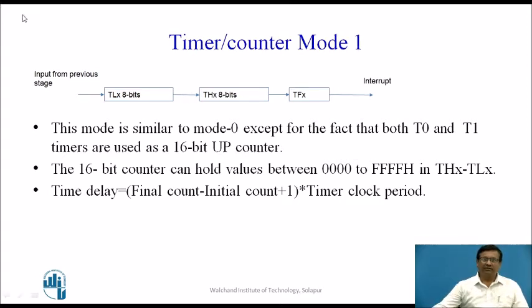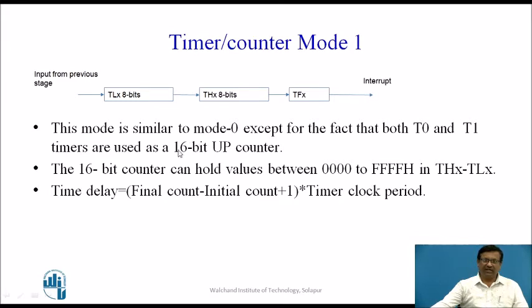This diagram shows how the timer counter in mode 1 works. The input from the previous stage is given to the timer registers TLX with 8 bits and THX with 8 bits. After all the bits of this 16-bit timer roll from 1 to 0, TFX will be generated, and after that an interrupt is generated. This mode is similar to mode 0 except both timer 0 and timer 1 are used as a 16-bit up counter, instead of 13-bit as in mode 0.